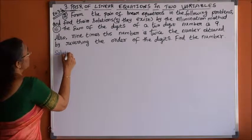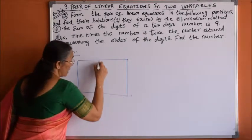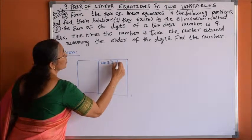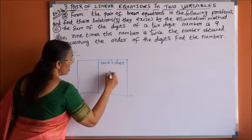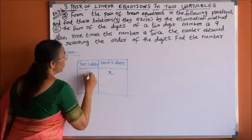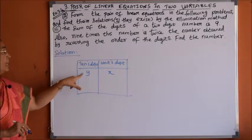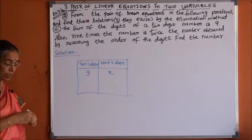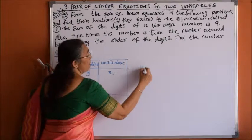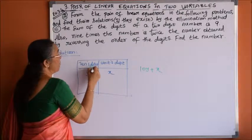Even for this problem, we consider the tabular column. We consider the units digit (ones digit) as x and the tens digit as y. So our required number will be 10y plus x, since the tens digit has to be multiplied by 10.